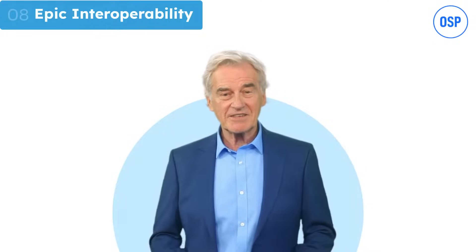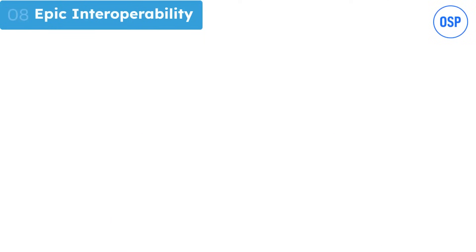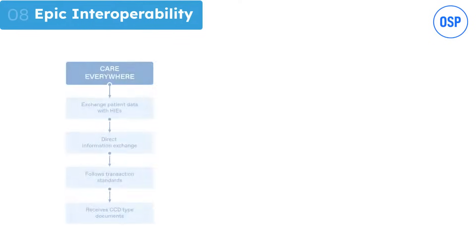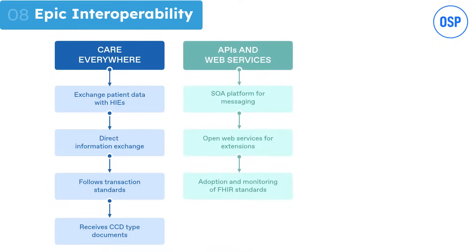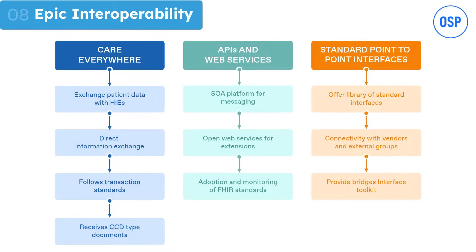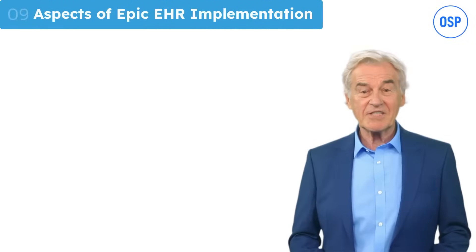That brings us to Epic's interoperability aspect. Most users are often curious about it. Epic interoperability works in three ways: first is Care Everywhere, which directly exchanges information with HIEs; next is through APIs and web services, which offer platforms for messaging and extensions for web services; and the last being standard point-to-point interfaces, which allows connectivity with other vendors and external groups.